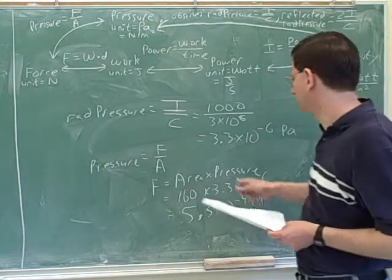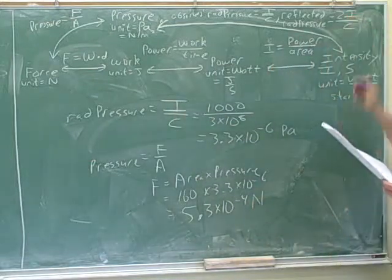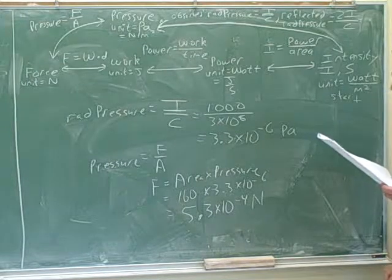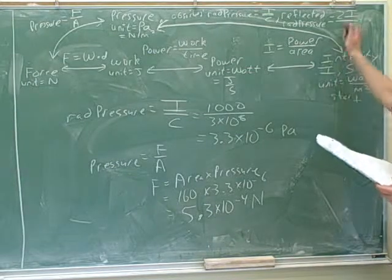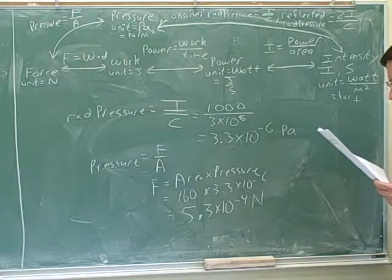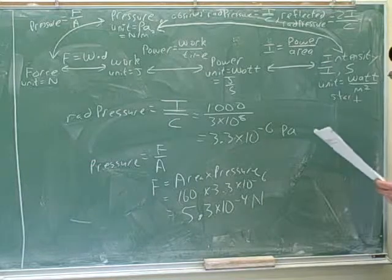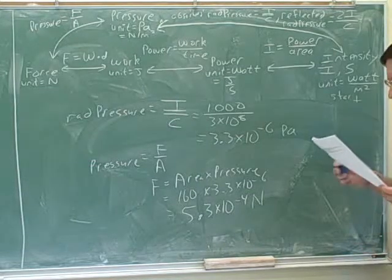And so how did you know to use this formula and not this one? Because it stated that it is a perfect absorber. That's right. If they'd say that it's been reflecting, you'd want to use this. That's something you definitely want to watch out for during the test. Anything else of importance here? I guess it just says explain.